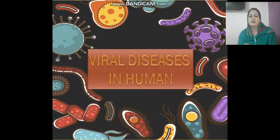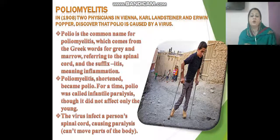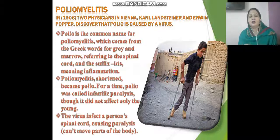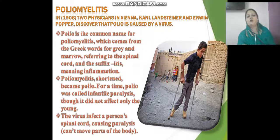The first disease is polio, or poliomyelitis. It is caused by the poliovirus. In 1908, two physicians in Vienna — Karl Landsteiner and Erwin Popper — first discovered that the poliovirus affects human beings. Polio is the common name for poliomyelitis, which comes from the Greek words meaning 'grey' and 'marrow,' referring to the spinal cord. The suffix '-itis' means inflammation.